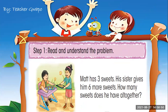Step number one: let us read and understand the problem. For example, let us read the story. Matt has three sweets. His sister gives him six more sweets. How many sweets does he have all together? That's step number one — you have to read and understand the problem.